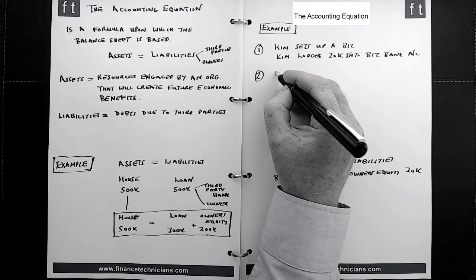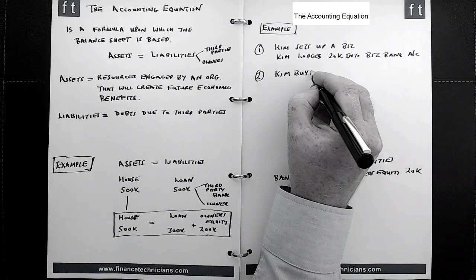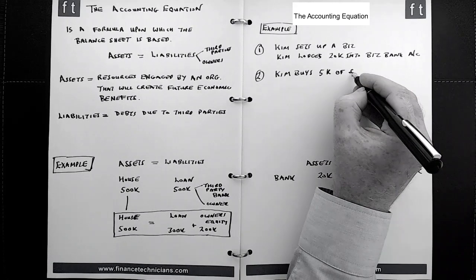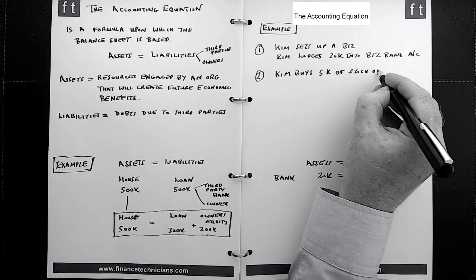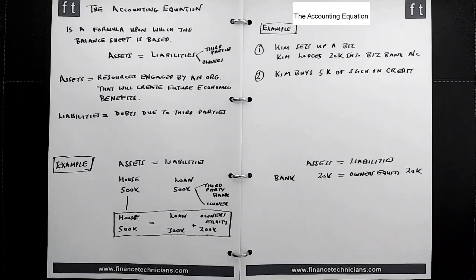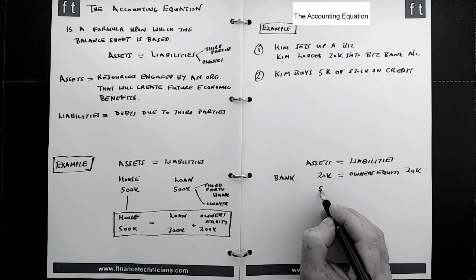Let's look at another transaction. Let's say Kim buys 5k of stock on credit, so it means that no money changes hands. Kim gets this on credit and has to pay it at some point in the future. So how is the accounting equation going to change here based on this information? Well, there's an asset and there's a liability created here. So the asset is going to be 5k, and that's actually going to be stock.